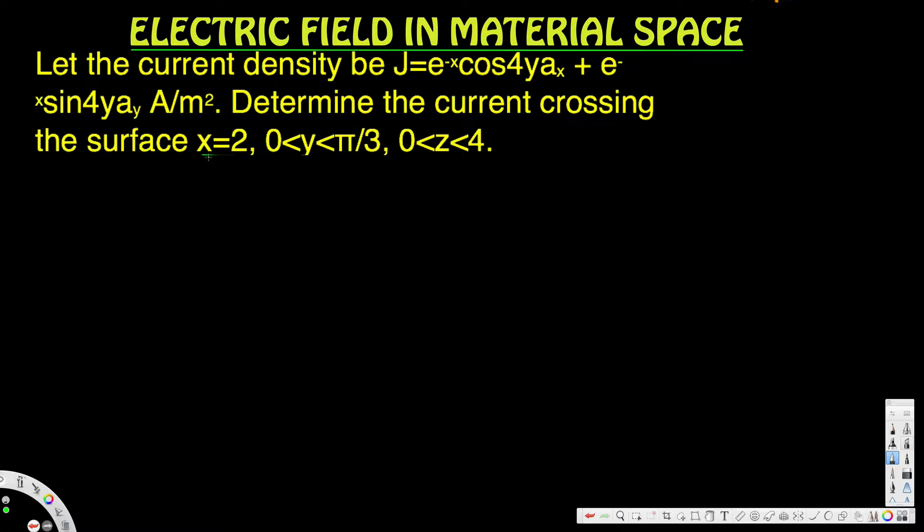They've mentioned the current crossing surface x equals 2, so we're only looking at the ax direction. We don't have ay or az—if we have something like that, it's going to be zero.